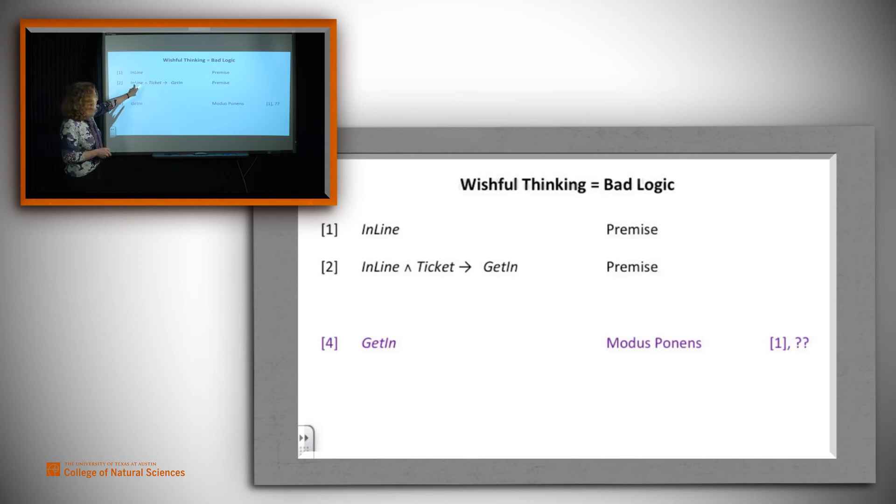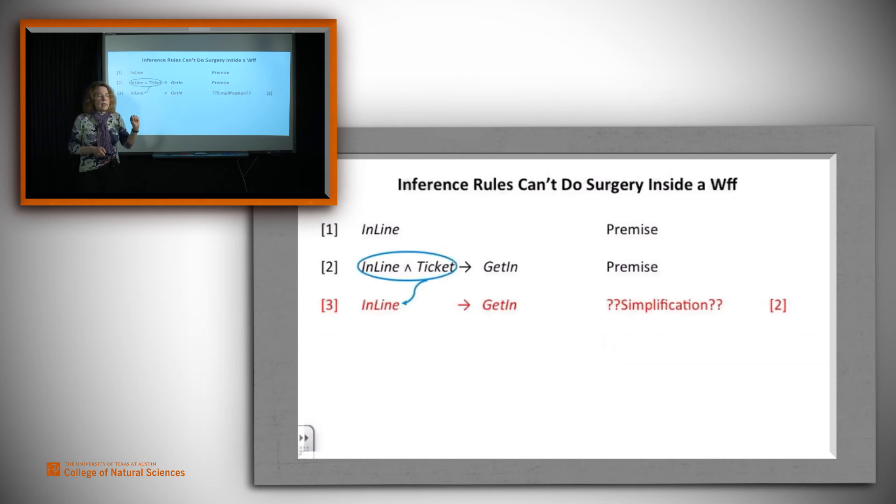But that doesn't work, right? Because modus ponens, if we want to use it with two, we've got to have in line and ticket. Well, what might they have done here? Suppose that one would reason as follows. If I actually knew that you were in line and had a ticket, then I could use simplification to say, well, then, in particular, you are in line. Suppose they did that here and derived from in line and ticket implies get in. Simplified this piece, the part before the arrow, to in line to drive three. Well, then we could use modus ponens with in line and three and drive get in.